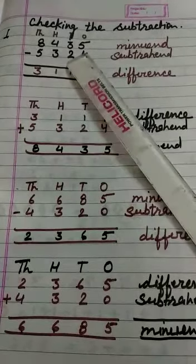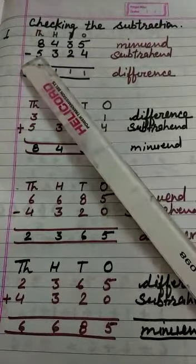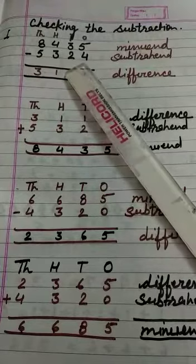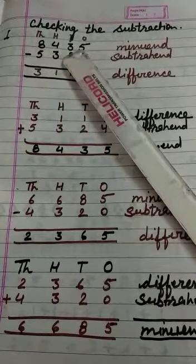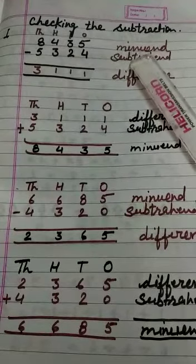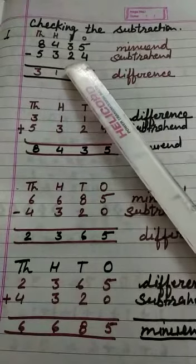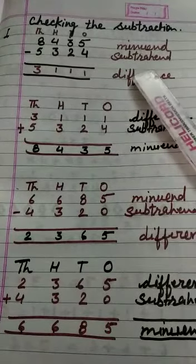This is the problem: 8,435 minus 5,324. The larger number is 8,435, or minuend. And 5,324 is the smaller number, or subtrahend.